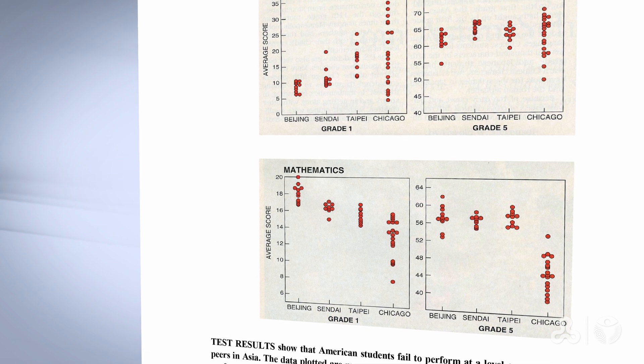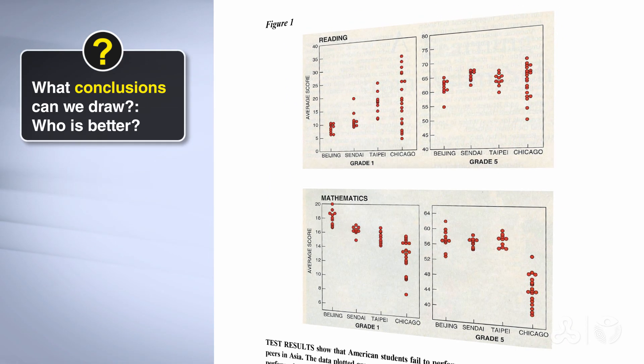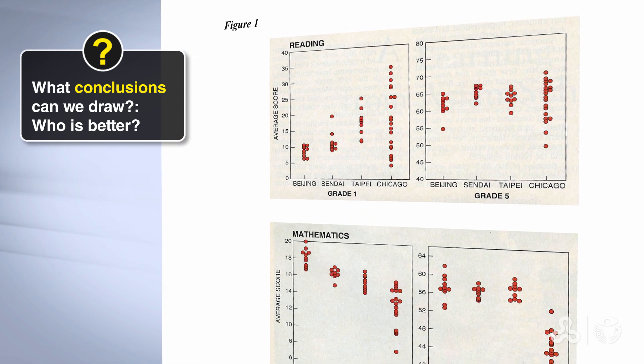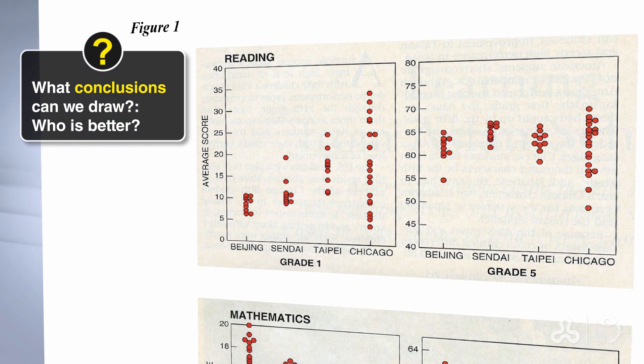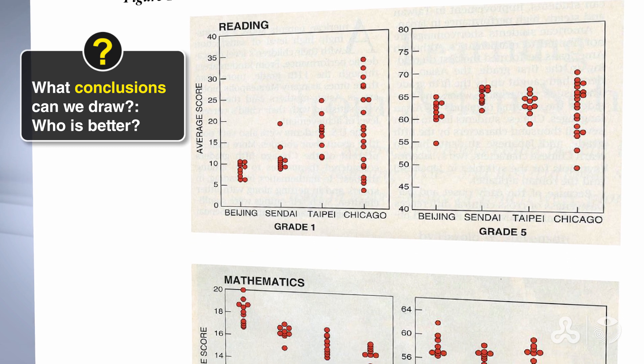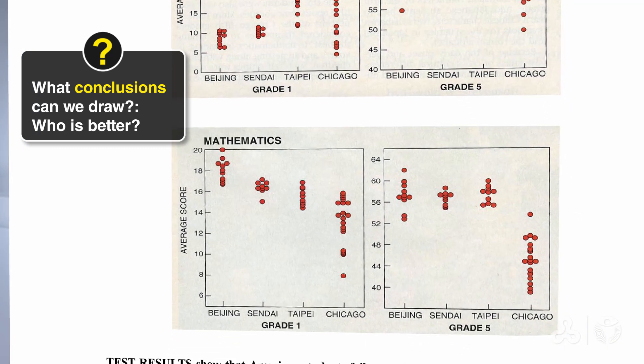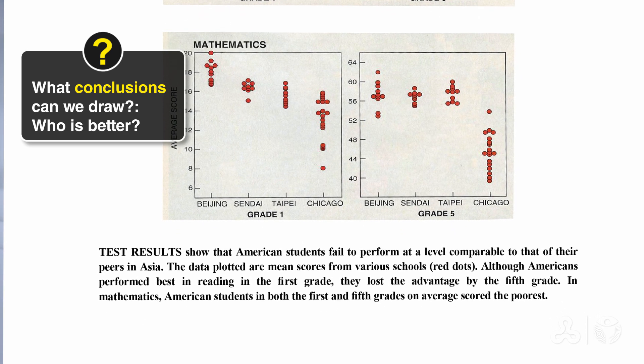Now we get to the tricky part. What is the conclusion that we can draw? Of course, when we talk about achievements, we ask also, who is better? Remember that we have some idea from the clips that we watched, the YouTube clips, and from the title, so let that help you in the conclusion. In reading, it isn't so clear. Let's try to understand what those red dots represent first.